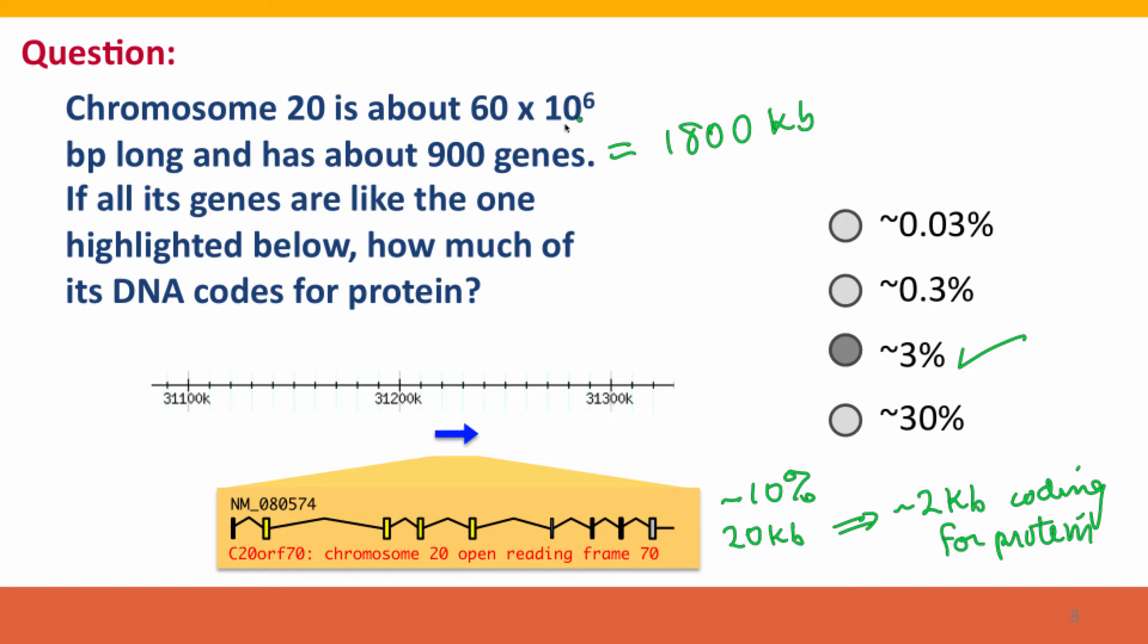But the chromosome itself is 60 million base pairs, which is 60,000 kb, and that means that about 3% codes for protein.